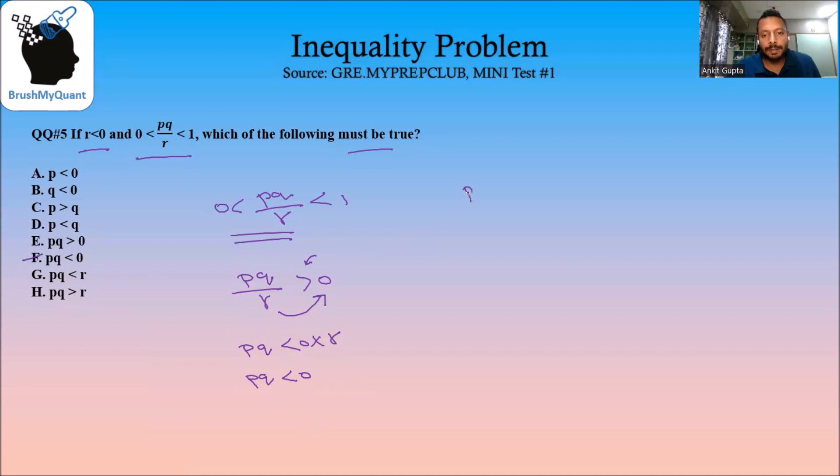Now let's take the other side, which is pq divided by r is less than 1. Again, multiplying with r on both sides will reverse the sign of the inequality. So we will get p into q will be greater than r. So that means option number h.